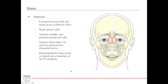The ethmoid sinus, also called ethmoid air cells, is located between the orbit and nasal cavity. It shares a very weak lateral wall with the orbit — just as an orbital blowout fracture can blow contents inferiorly, it can also blow contents medially into the ethmoid sinus. There are three groups of ethmoid air cells: anterior, middle, and posterior, each draining into different areas of the nasal cavity. Innervation is from the anterior and posterior ethmoidal nerves, with parasympathetic innervation from facial nerve branches via the pterygopalatine ganglion.